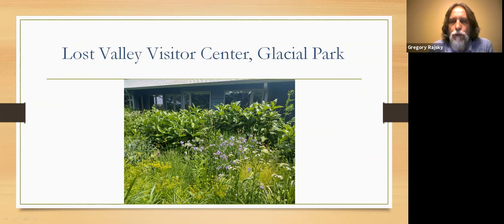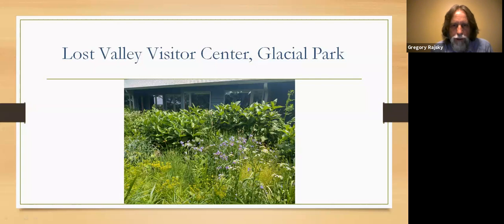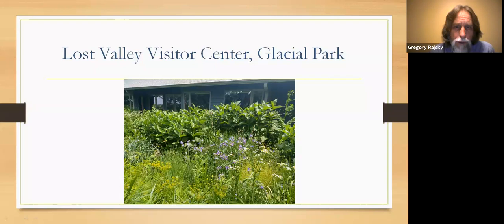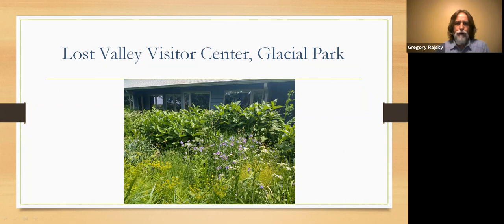It's not just the home environment or schools — here's a public agency with a wonderful native plant garden next to their visitor center at Glacial Park of the McHenry County Conservation District. They followed traditional guidelines: taller plants in the back — cup plant, which can be a little aggressive — blue spiderwort, yellow golden alexanders, white fleabane, grasses and sedges, compass plant off to the right. The taller structural things are in the back, the showier things in the middle, and shorter structure closer to the walkway.